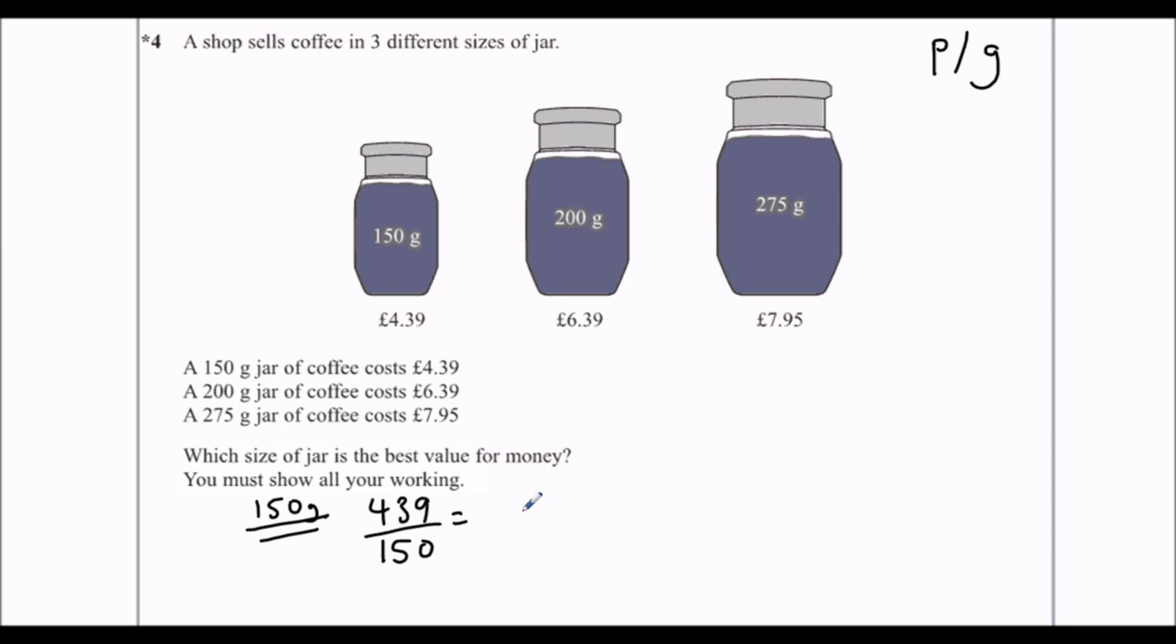and that gives us 2.926 recurring, that's what a little dot means, recurring pence per gram.